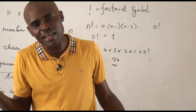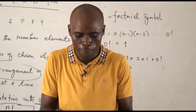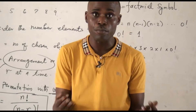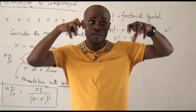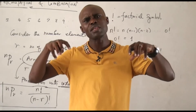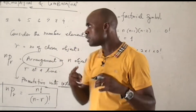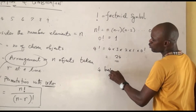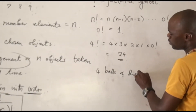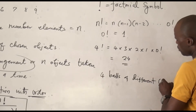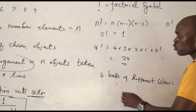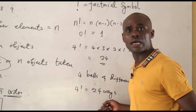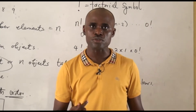So 4 factorial gives me 24 ways. For example, how many ways can I arrange 4 balls of different colors without repetition? If I have 4 balls — 1, 2, 3, 4 — of different colors, in how many ways can I arrange them? It is 4 factorial, so you can arrange those balls in 24 ways. Take note that you must consider order in this case.